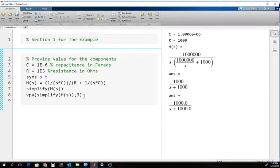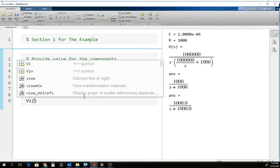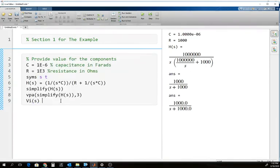So this simple RC circuit, I want to put a 5-volt step into it. The Laplace transform of the step is 1 over s. I'm going to create our input as a function of s, and I'm going to say that's equal to 5 times 1 over s.